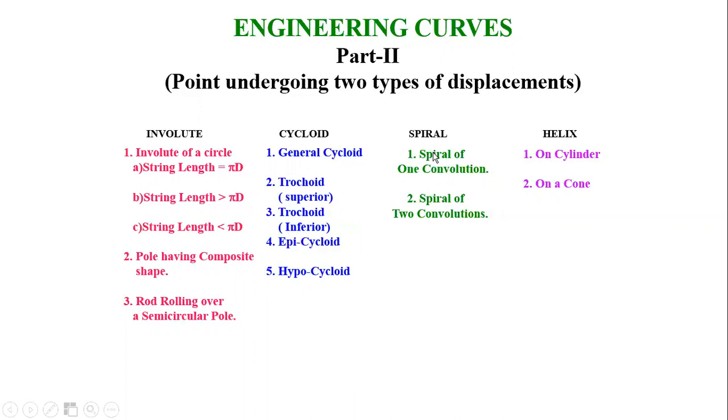Then next is spiral. Spiral is based on the first one on one convolution, spiral of one convolution, and in second, spiral of two convolutions.